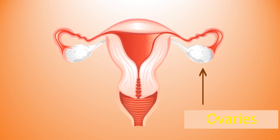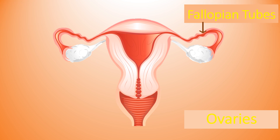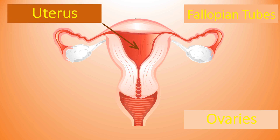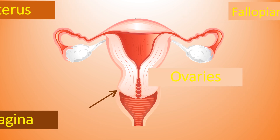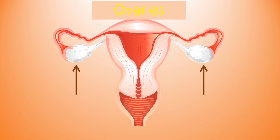Before that, we have to know the different parts of the internal female reproductive system. As shown here, there are two ovaries, next is the fallopian tube, here is the uterus which is a very important part of the female reproductive organ, and next is the vagina.